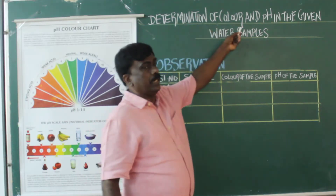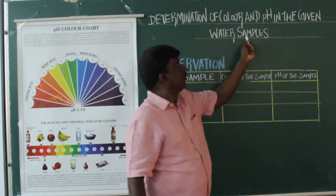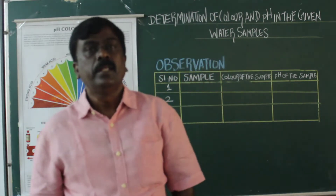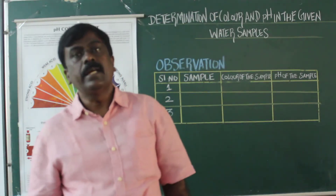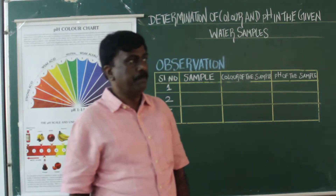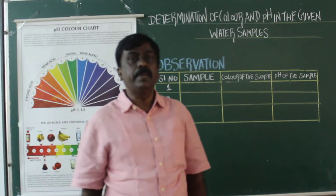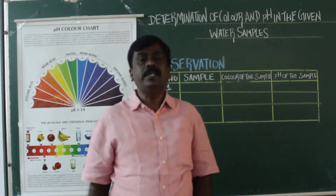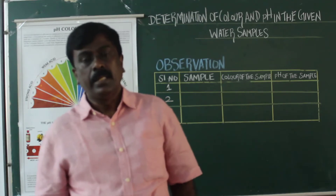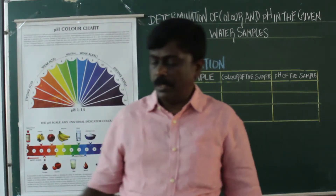Determination of color and pH in the given water samples. For this, first you must write the aim: to investigate the given sample from letter 1, 2, 3 and determine the quality of water for consumption. Second heading, you must write materials required.